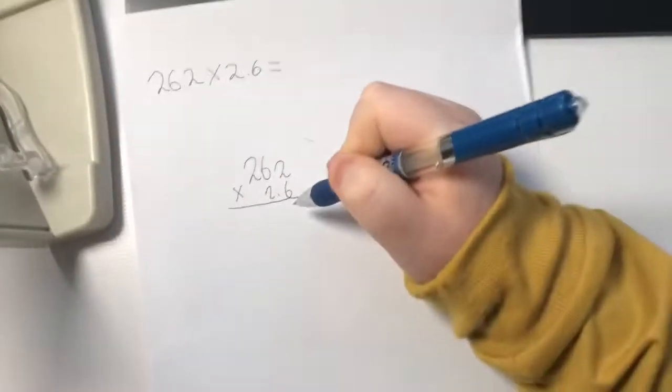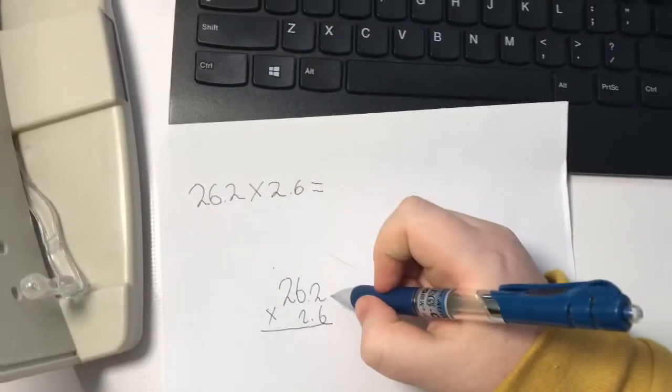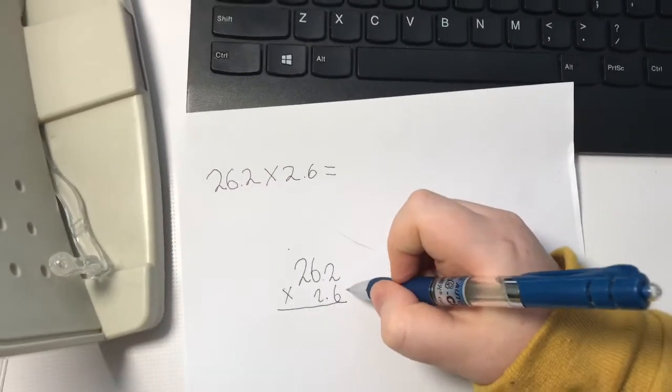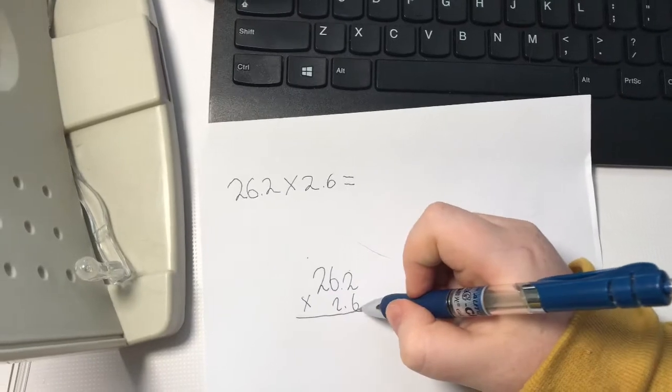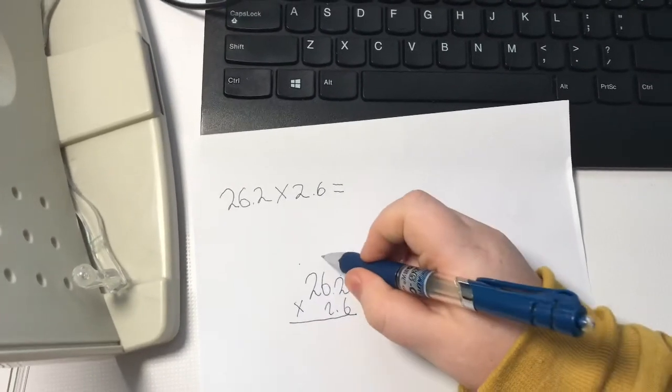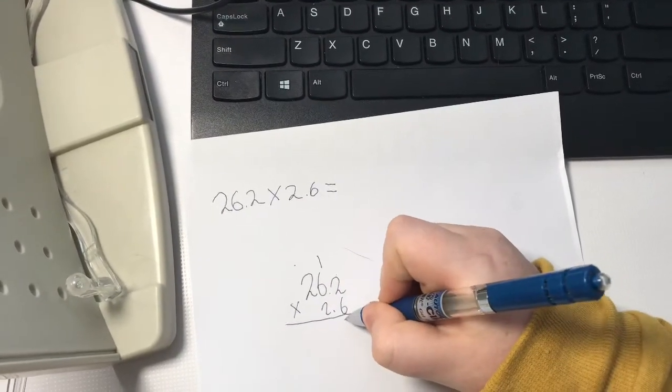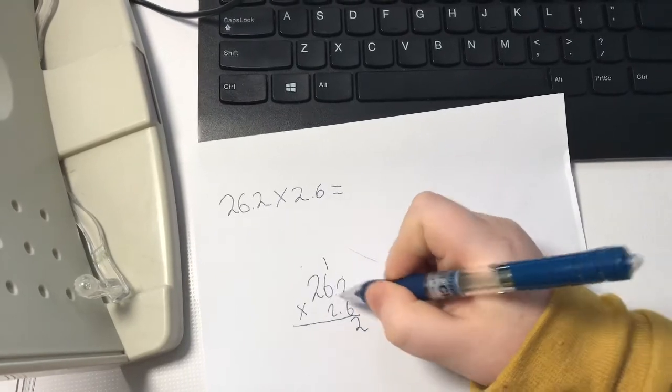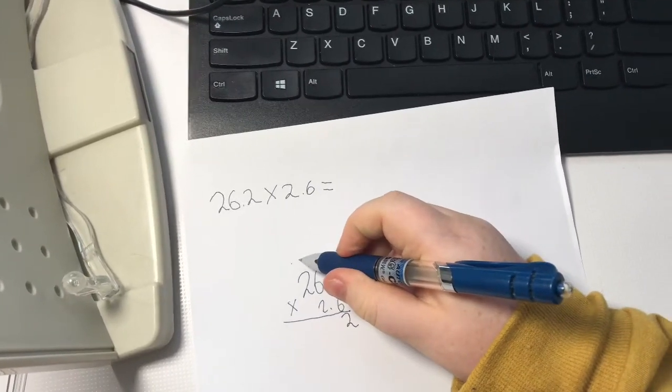So then, you need to do it the same as normal multiplication, so 2 times 6 equals 12, 6 times 6 will be 36.